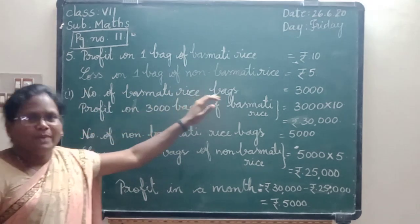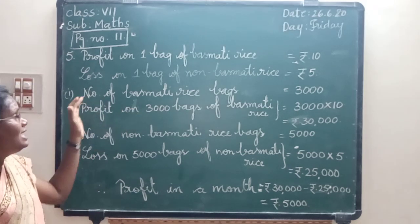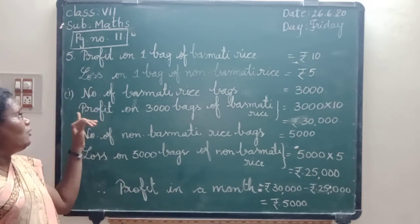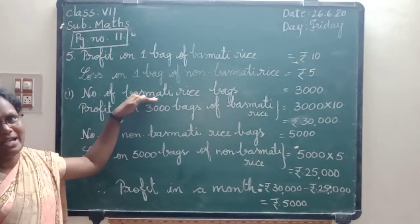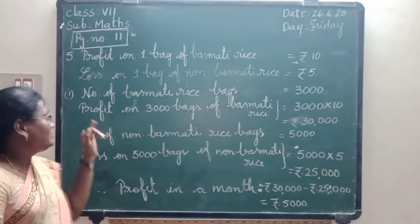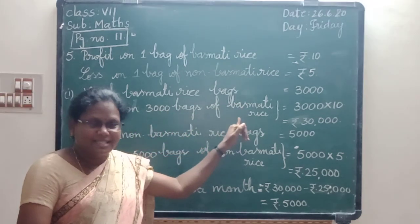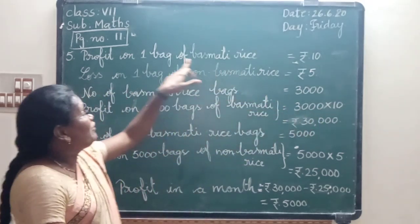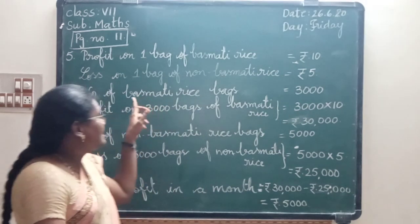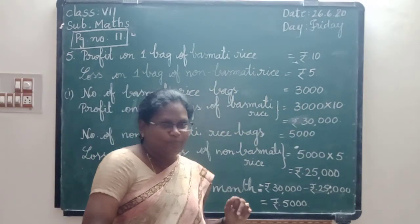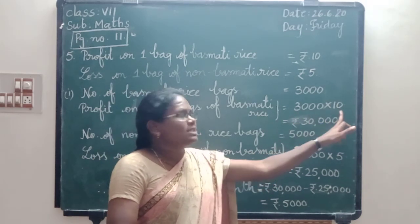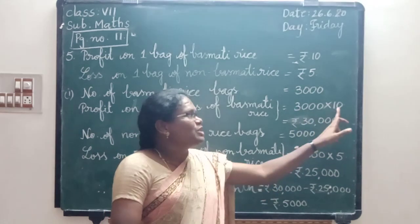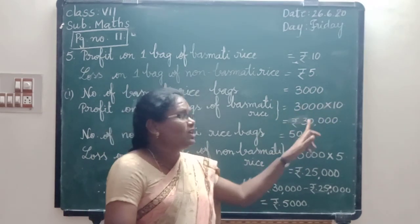First, number of basmati rice bags: 3,000 bags. Profit on 3,000 bags of basmati rice: 3,000 into 10. What is the profit per bag of basmati rice? 10 rupees. So 3,000 into 10. 3 ones are 3. Count the zeros: 1, 2, 3, 4 zeros on the right side of 3. So 3,000 into 10 equals 30,000.